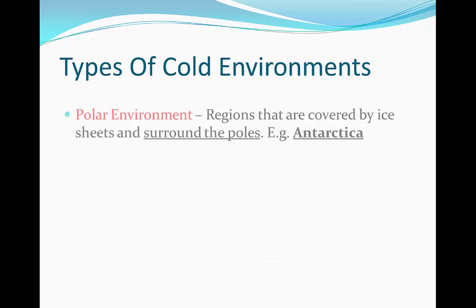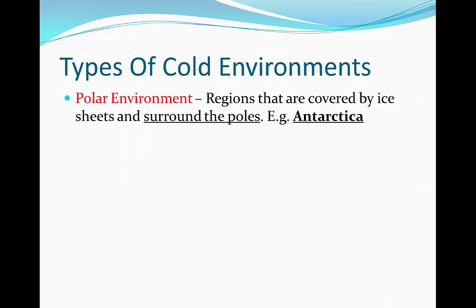There are three main types of cold environments. The first is a polar environment, which is a region covered by ice sheets that surrounds the poles. For example, Antarctica.